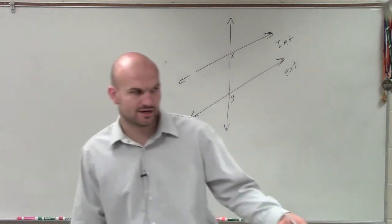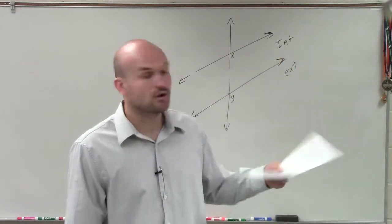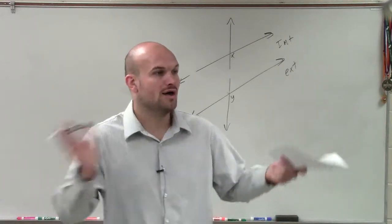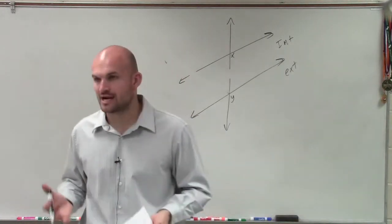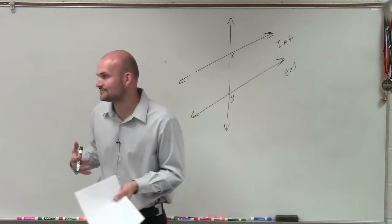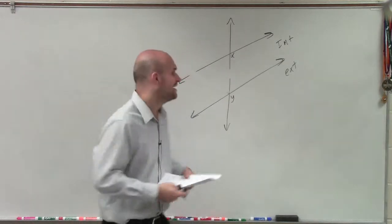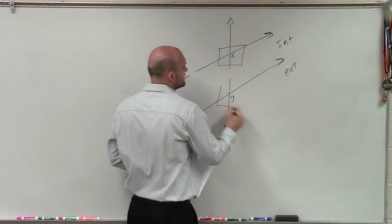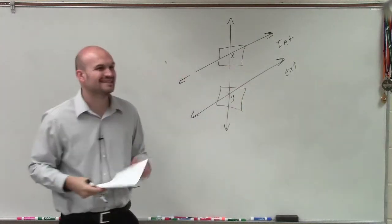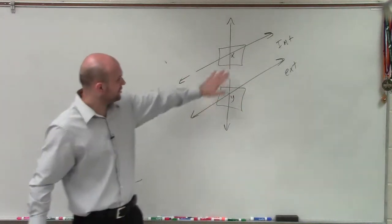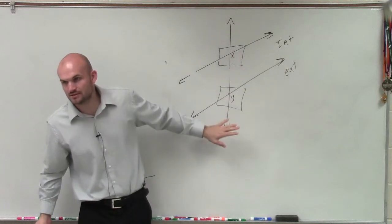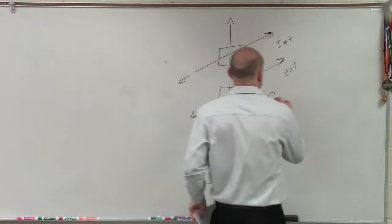Now remember our definitions. We talked about alternate interior, consecutive interior, or alternate exterior. Those all had to be both interior or both exterior. And then there was that other one, which was corresponding. Corresponding says that they have to be one interior, one exterior, and they have to be in the exact same position. Are these two angles in the exact same position? Yes, so they are what we call corresponding.